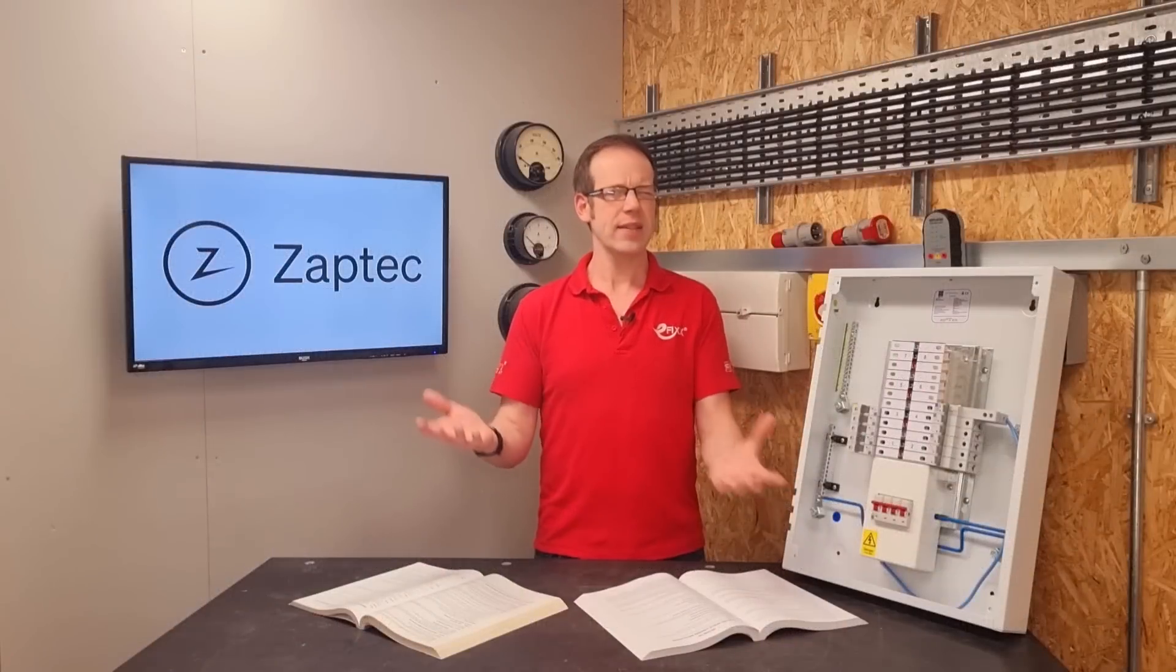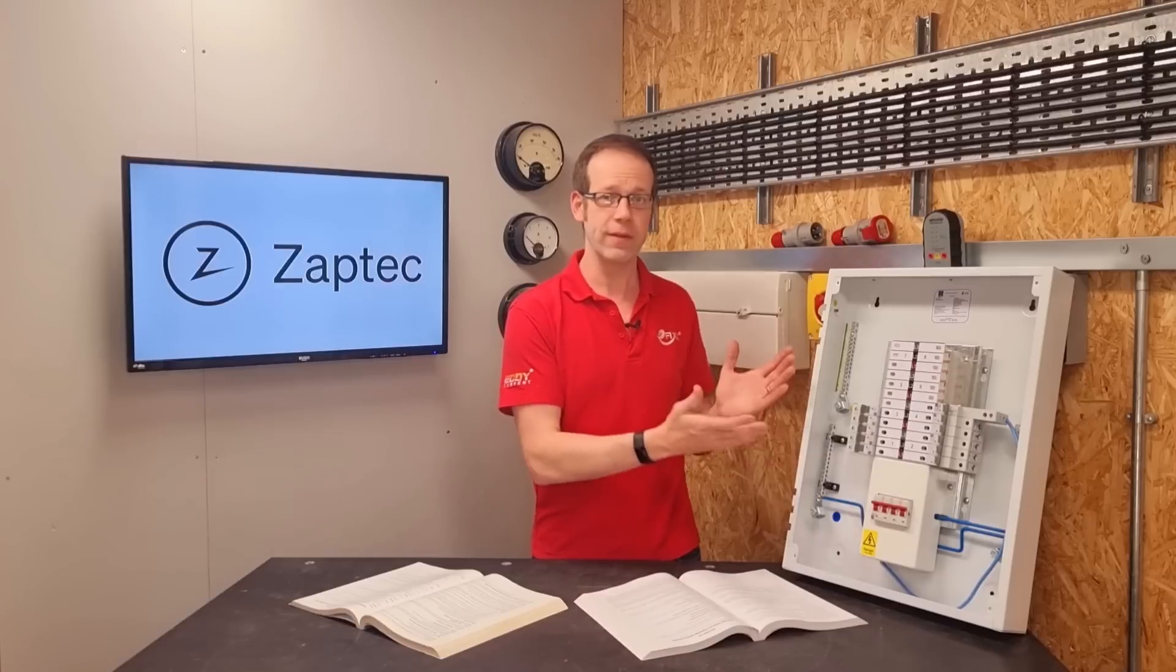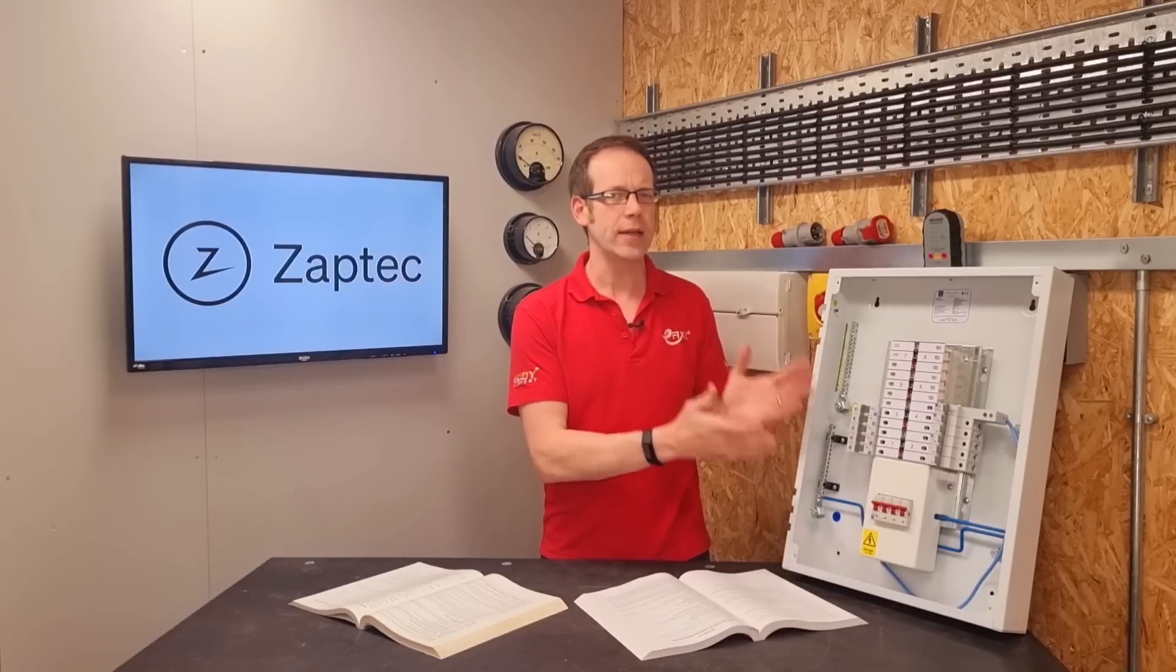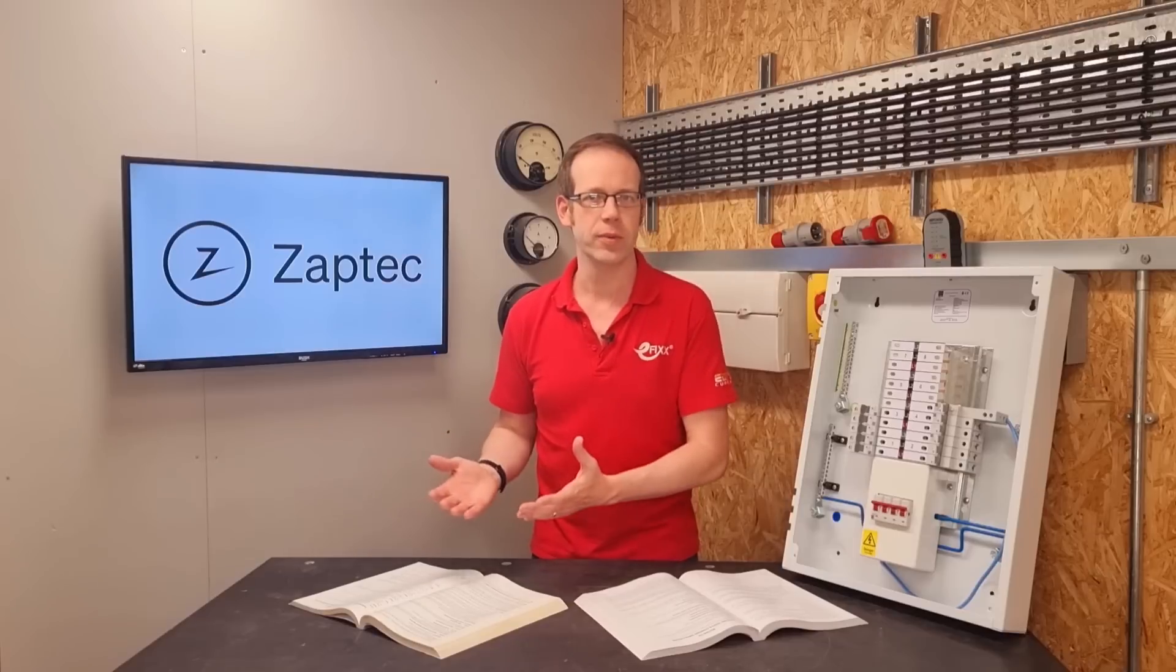So at first glance that seems pretty acceptable—that if we're connecting an EV charge point to an installation fed by a three-phase supply, we can connect the protective conductor to the PME and all will be well. So why was that acceptable?